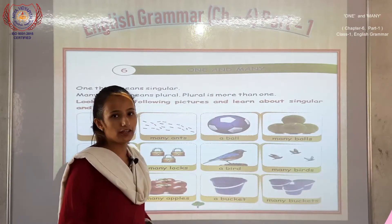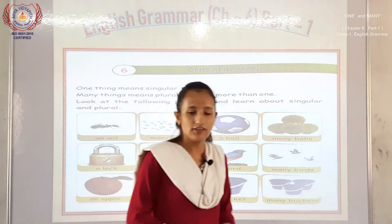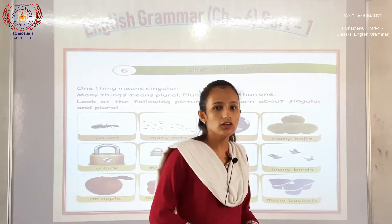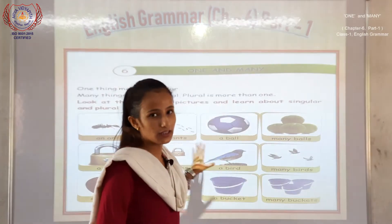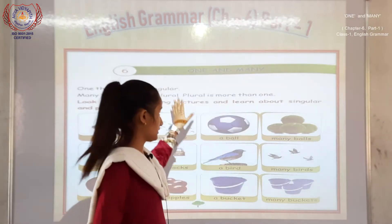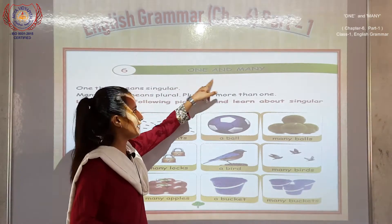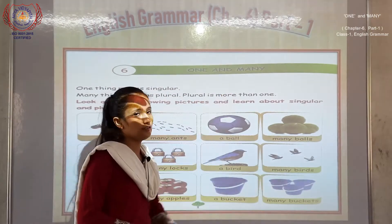In the previous class, we have finished chapter 5. So I am going to start chapter 6. You can see here: one and many.